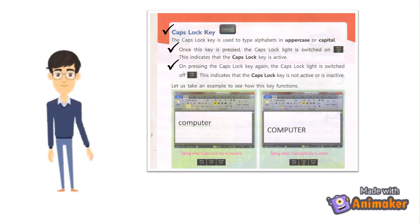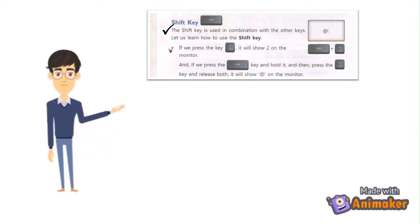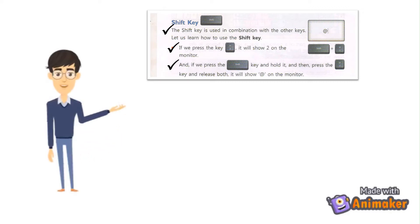Let us take an example to see how this key functions. Shift Key: The Shift Key is used in combination with other keys. If we press the key, it will show 2 on the monitor. And if we press the Shift Key, hold it, and then press the key and release both, it will show the symbol on the monitor.